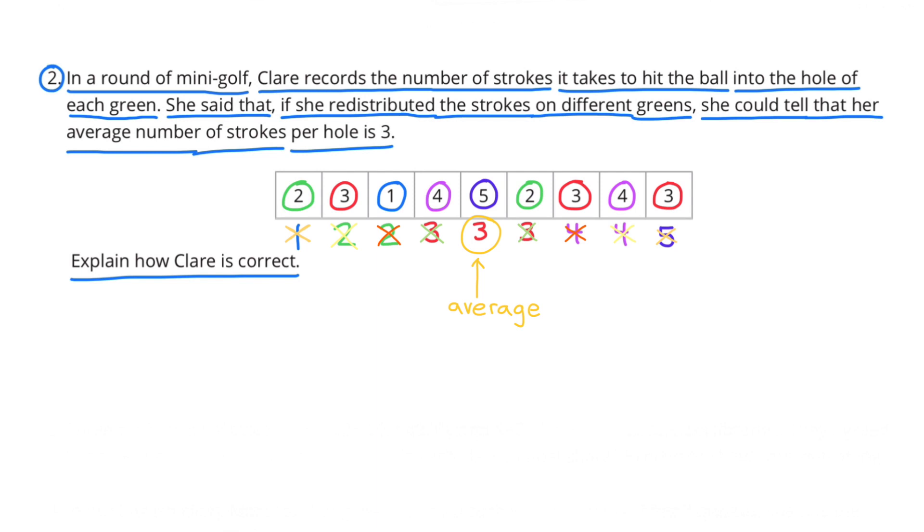I can also add all these up, and I get 27. And 27 divided by 9 holes equals a 3-shot average per hole.